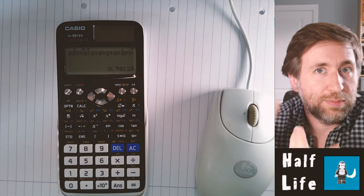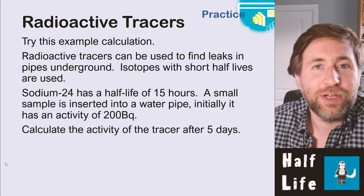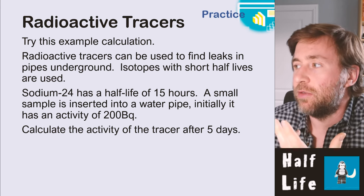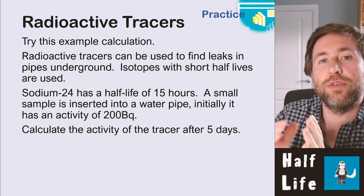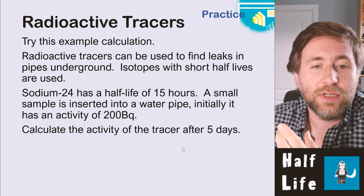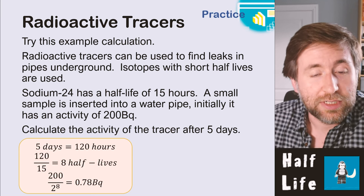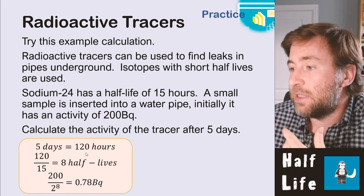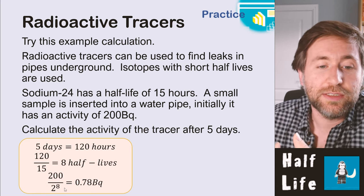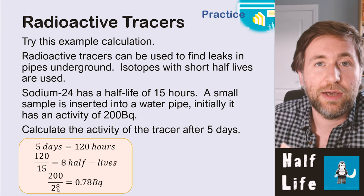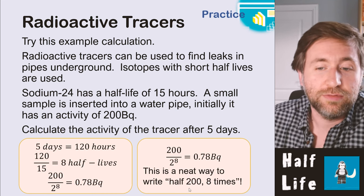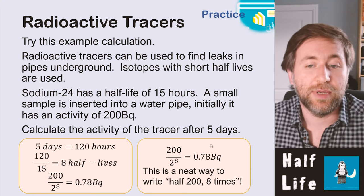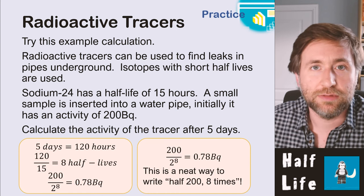A useful shortcut: instead of halving repeatedly, write it as the starting value divided by 2 to the power of the number of half-lives. So 200 divided by 2⁸ equals 0.78 becquerels. This is a neat way to simplify the maths. Work out how many half-lives there are, then calculate starting value ÷ 2^(number of half-lives).